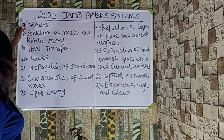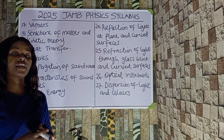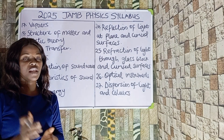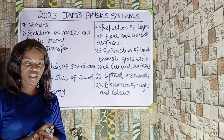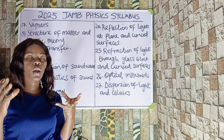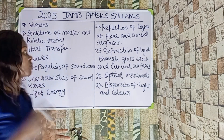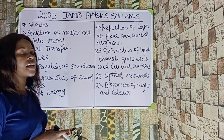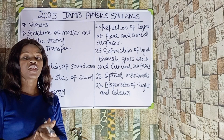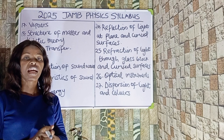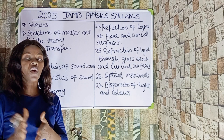Number seventeen is vapors. Under vapors you'll be looking at saturated vapors, unsaturated vapors, dew points, and relative humidity. Number eighteen is the structure of matter and kinetic theory. You should know what atoms and molecules are, the assumptions of kinetic theory, and the states of matter along with their characteristics.